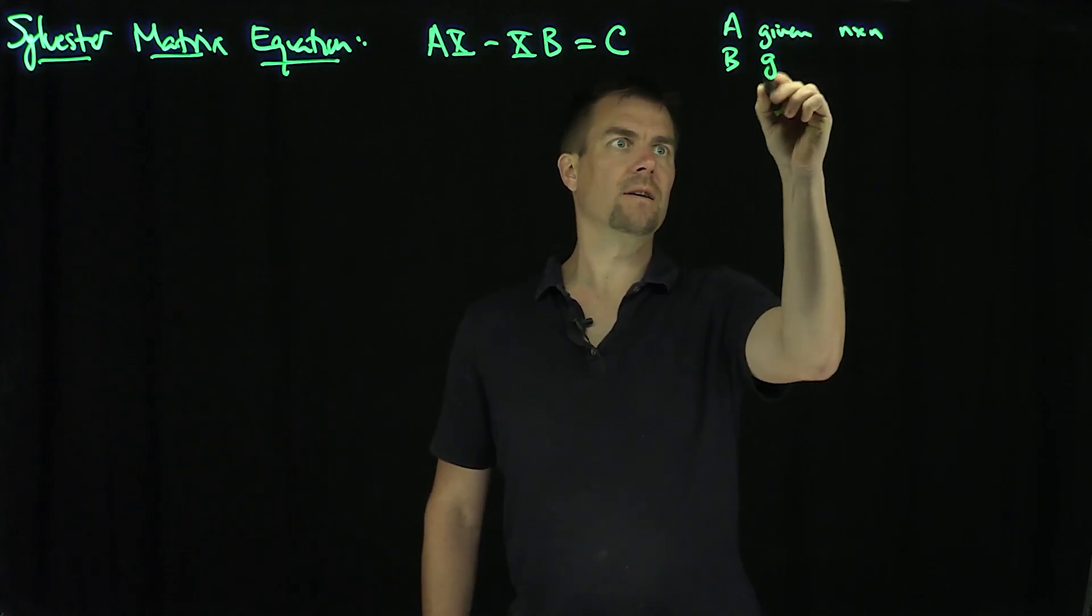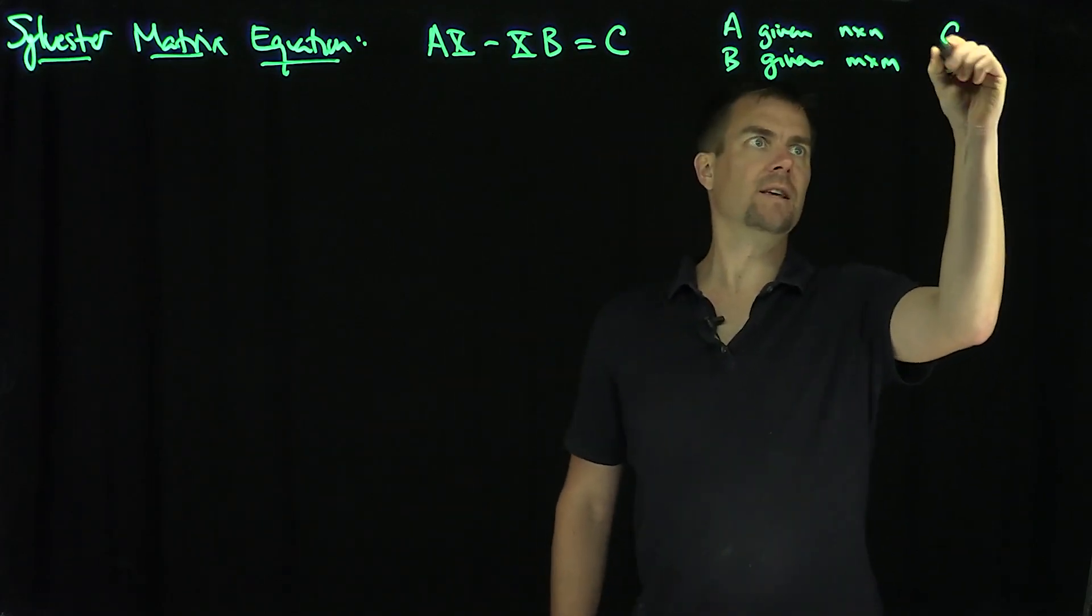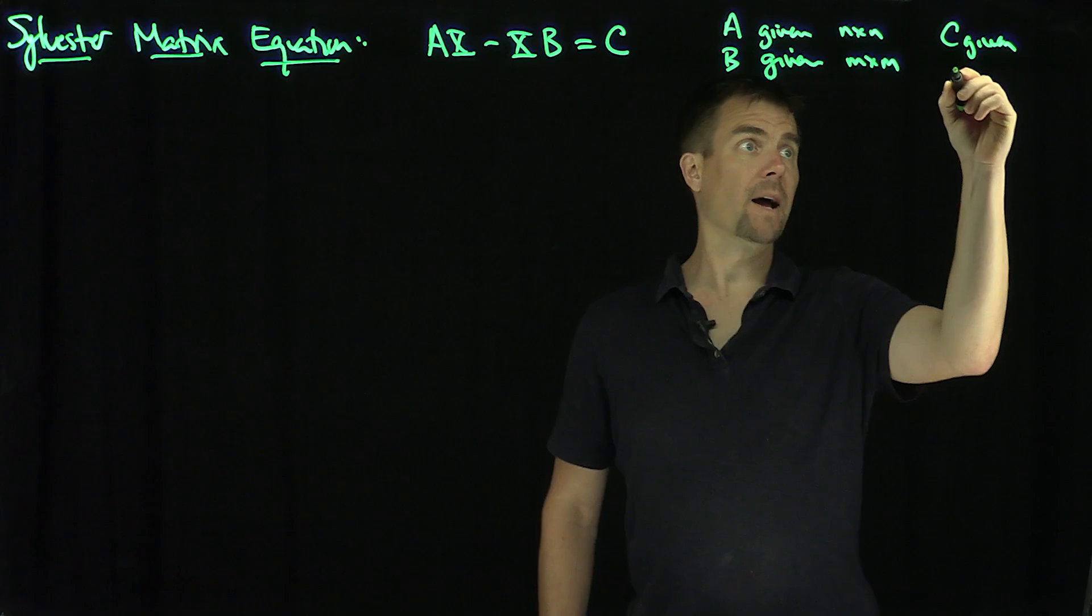B is a given m by m matrix, and C is given as an n by m matrix.